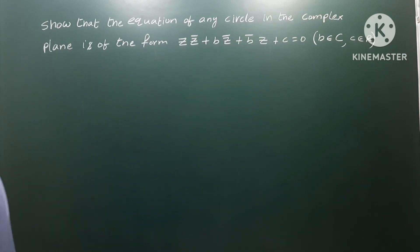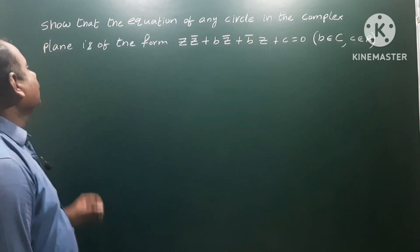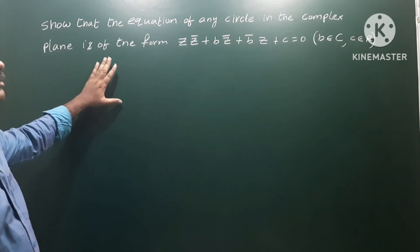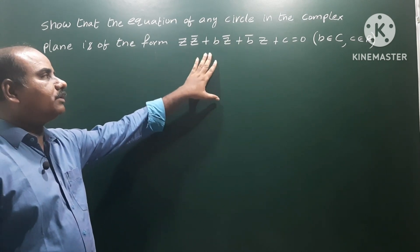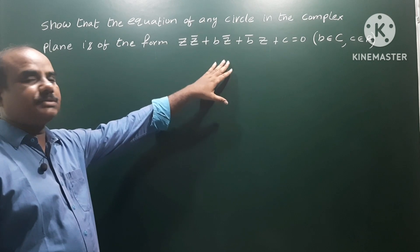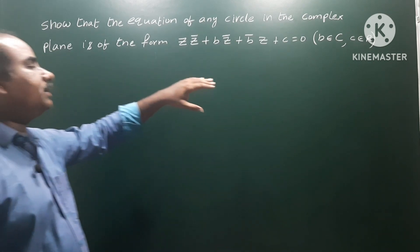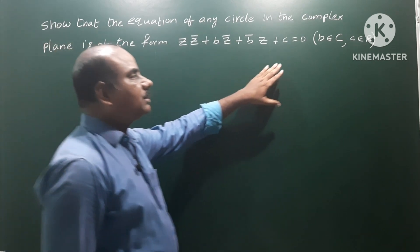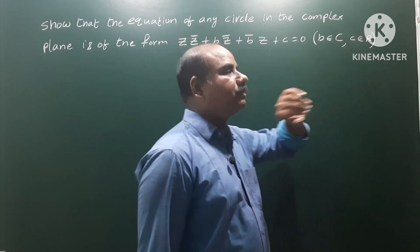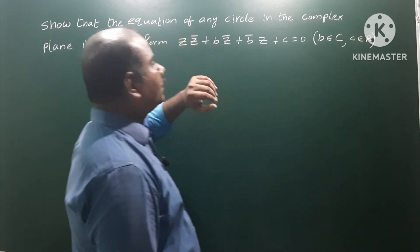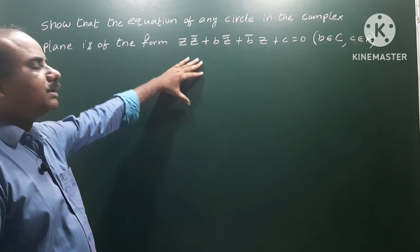The next one: show that the equation of any circle in the complex plane is of the form z·z̄ + b·z̄ + b̄·z + c = 0, where b belongs to complex numbers and c belongs to real numbers. This is the circle equation in the complex plane.